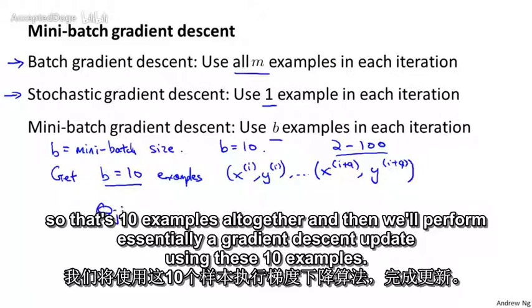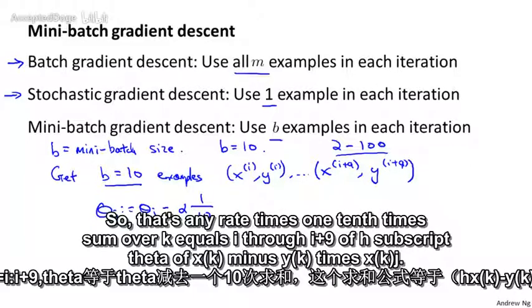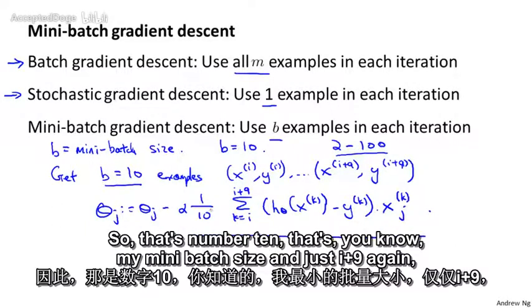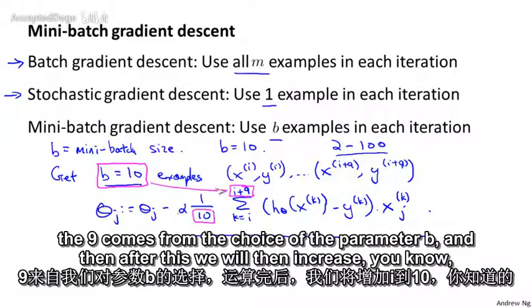And then we'll perform, essentially, a gradient descent update using these 10 examples. So that's the learning rate times 1/10 times sum over k equals i through i+9 of h_theta(x^(k)) minus y^(k) times x_j^(k). And so in this expression, we're summing the gradient terms over my 10 examples. So there's a number 10, that's my mini-batch size. And this i+9, again, the 9 comes from the choice of the parameter b.